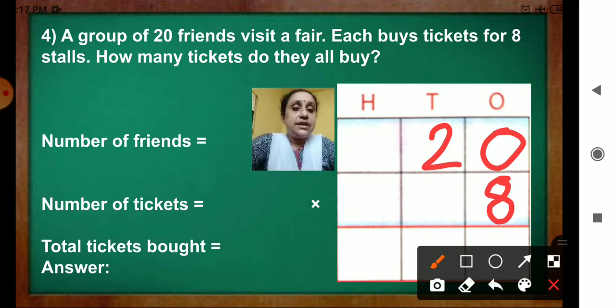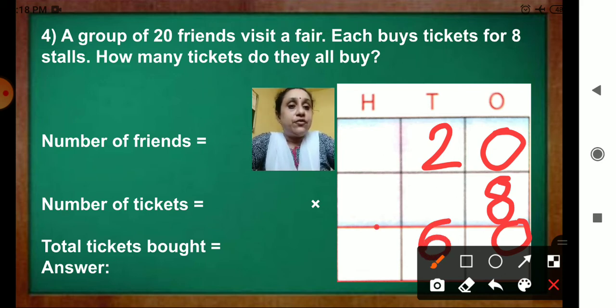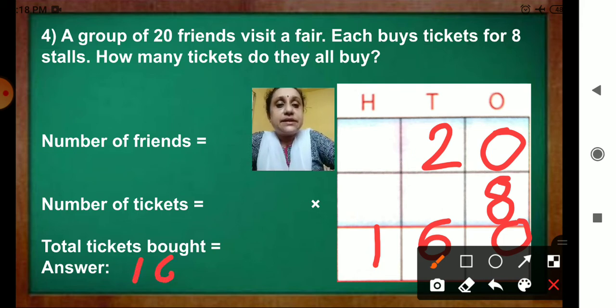See the multiplication sign. Now we have to multiply these 2 numbers. To get the total tickets bought. You have to multiply. And what you will get? You will get the product. 8 zeros are 0. And 2 eights are 16. Write 6 here in the tens place. And 1 in 100's place. So the answer is 160 tickets they all bought. They all bought 160 tickets.